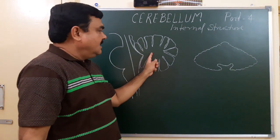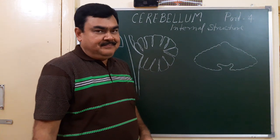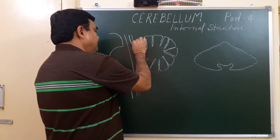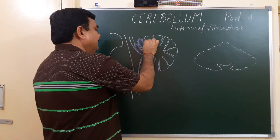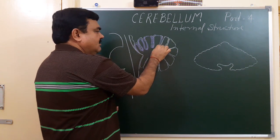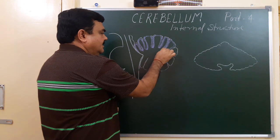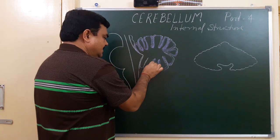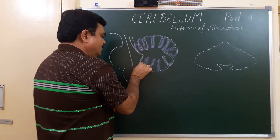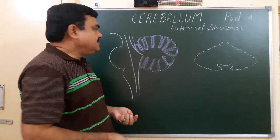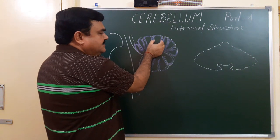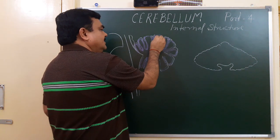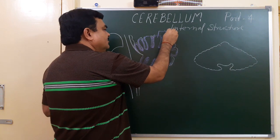This is a sagittal section and this is a coronal section of the cerebellum. You can see this is the peripheral part of the cerebellum. Here, numerous fissures are present. These fissures divide the surface into several lobes. Between two adjacent fissures, this leaf-like structure is known as folia.